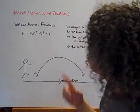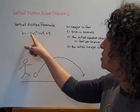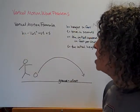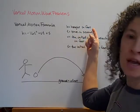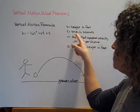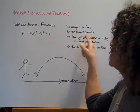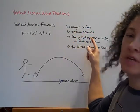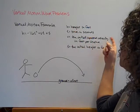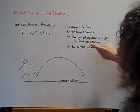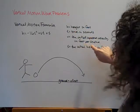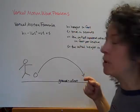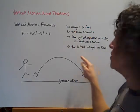So a vertical motion formula is h equals negative 16t squared plus vt plus s. So what does each of those mean? h is equal to the height in feet, t is equal to the time in seconds, v is equal to the initial upward velocity in feet per second. So notice my units need to be the same here. So my units of my velocity need to be the same as my height in my time.